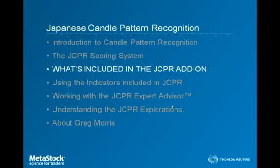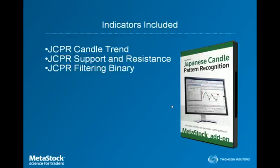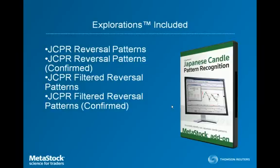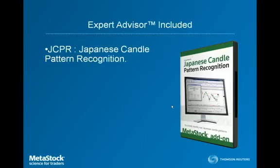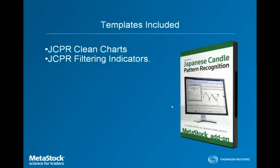Now that we've covered the scoring system, let me talk about what's included in the JCPR add-on. The JCPR add-on includes three new indicators very specific to this add-on: the JCPR Candle Trend, JCPR Support and Resistance, and the JCPR Filtering Binary. Explorations included are the reversal pattern, the reversal pattern confirmed, the filtered reversal pattern, and the filtered reversal pattern confirmed. The JCPR also comes with one expert advisor called Japanese Candle Pattern Recognition, and two templates: JCPR Clean Charts and JCPR Filtering Indicators.